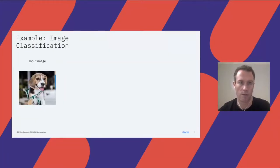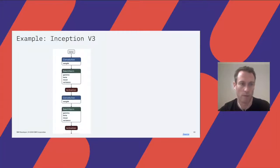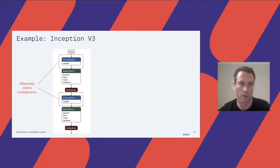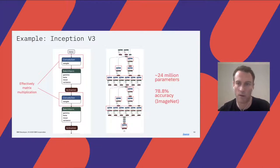We'll use image classification as our running example — a very common deep learning computer vision task. We start with an input image, send it through a large neural network for inference, and get a prediction for the class out. A very common and highly performant modern network for image classification is Inception V3. The core model is made up of convolutional blocks — typically a convolutional operator followed by normalization and then an activation function like a rectified linear unit. This computation boils down to matrix multiply and addition operations. The entire Inception model has 24 million parameters and achieves 78.8% accuracy on ImageNet.